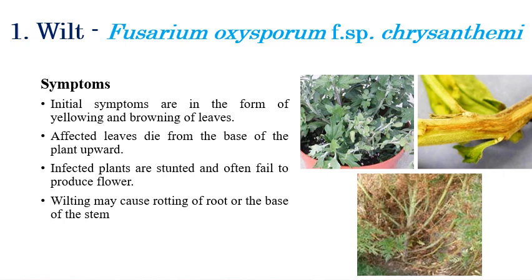Starting with Fusarium wilt, caused by Fusarium oxysporum f. sp. chrysanthemi, the common symptoms include yellowing of leaves and brown color discoloration. In the last stage, complete wilting occurs. If you cut open the stem, you can observe brown color discoloration of the vascular bundles, which are completely discolored to brown. The affected leaves will die.